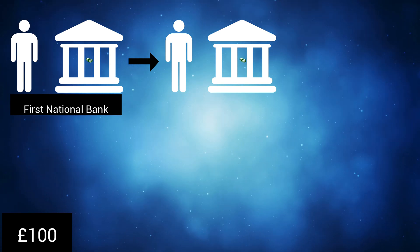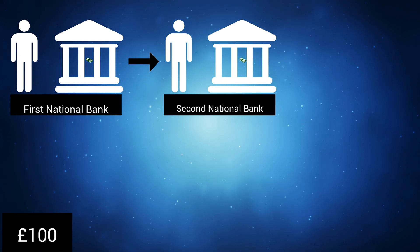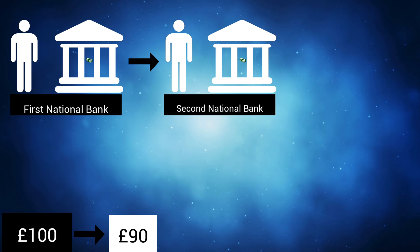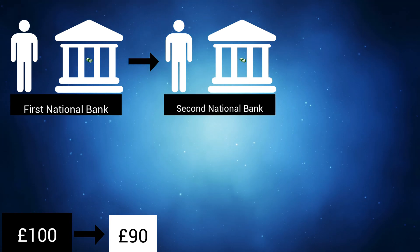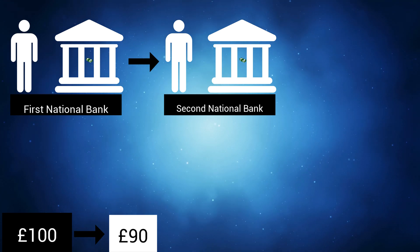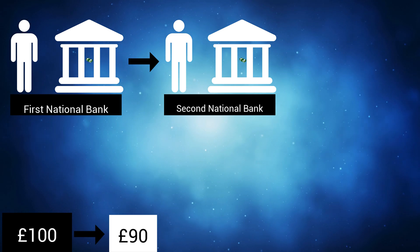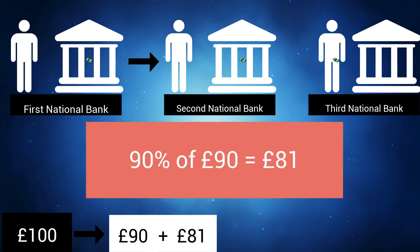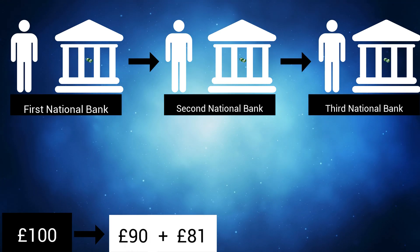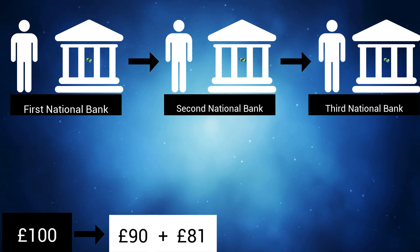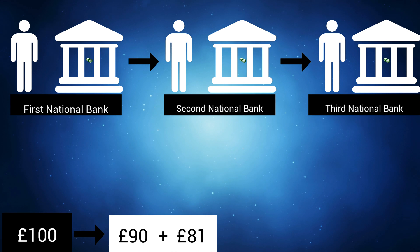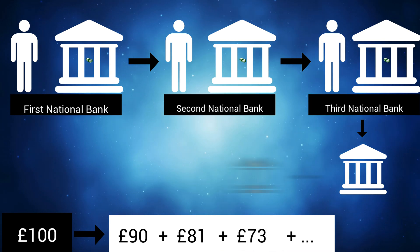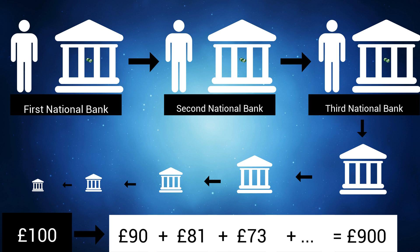Chances are this is with a different bank — we can call this bank Second National Bank. Now you have £100 in your bank account and the other person has £90 in their account. This £90 is money which did not exist before; it only exists because the bank lent it out, so the supply of money has just increased by £90. Second National Bank may well decide to lend out 90% of their deposit, and so lend £81 to a third person. This is also new money that did not exist before. We now have £171 of new money in the economy from an initial £100 deposit. This process continues, and if all banks lend out 90% of their deposits, the total reaches £900 of new money.